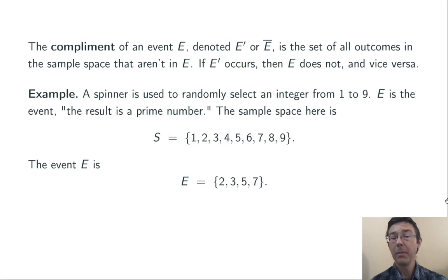So the complement of E, E prime, is going to be the event that E does not occur. So written as a set, it's going to be all the numbers less than 10 that are not prime: 1, 4, 6, 8, and 9.